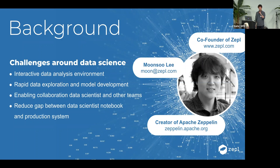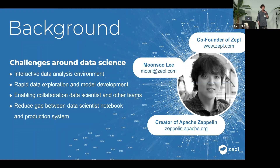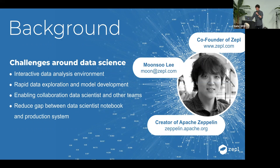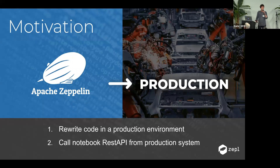At Zeppelin, we were addressing challenges around data science: how can we build an interactive data science environment, enable rapid exploration of data, rapid development of models, and enable collaboration between data science teams and non-data-science teams. One key challenge is the gap between data science notebooks and production systems, and today I'm going to focus on this problem — which applies to any notebook, like Jupyter.